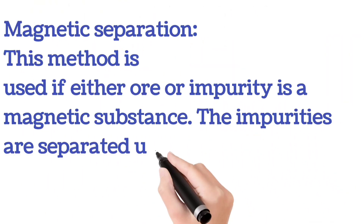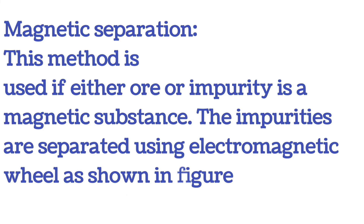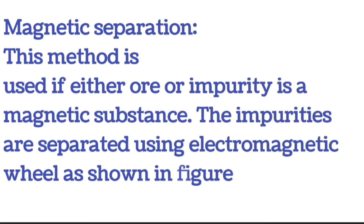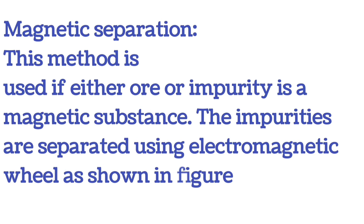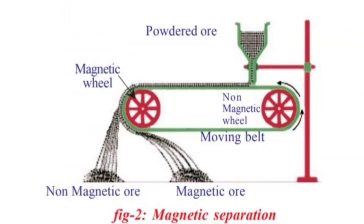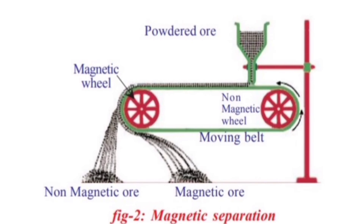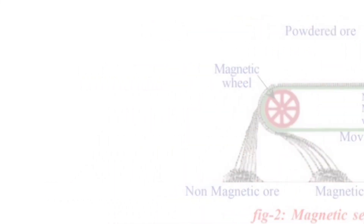Magnetic separation: this method is used if either the ore or the impurity is a magnetic substance. Impurities are separated using an electromagnetic wheel as shown in the figure. In the diagram, there is a non-magnetic wheel, a magnetic wheel, and a moving belt. Powdered ore is fed in, and magnetic ore and non-magnetic ore are separated as the belt moves.